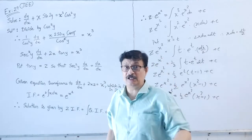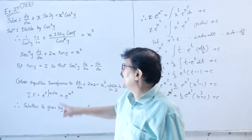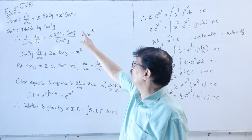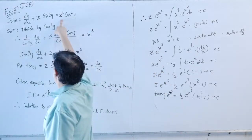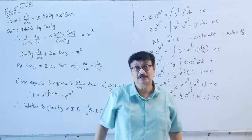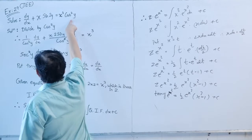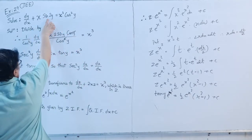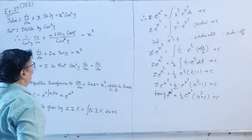Example 29 (JEE level): Solve dy/dx + x·sin(2y) = x³·cos²(y). Here sin(2y) = 2·sin(y)·cos(y). We need to divide by cos²(y) to bring it into a manageable form, because we need a substitution involving tan(y).